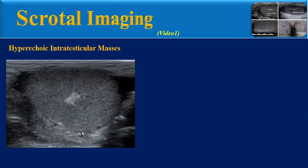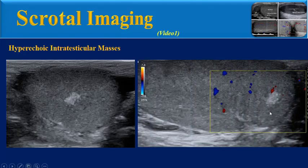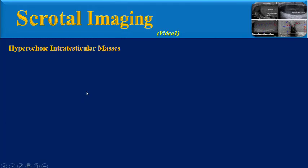During scrotal ultrasound, we may incidentally encounter intra-testicular hyperechoic lesions without any vascularity on color Doppler ultrasound. The patient has no symptoms and no palpable mass on physical exam. These findings are suggestive of hyperechoic intra-testicular masses. What is the differential diagnosis of these hyperechoic intra-testicular masses?